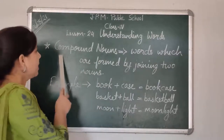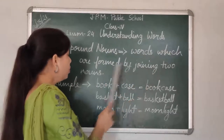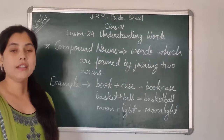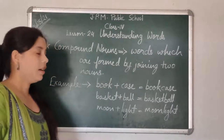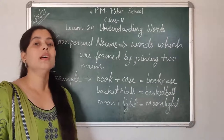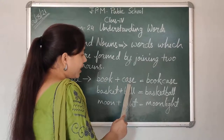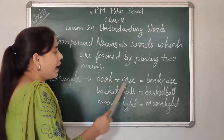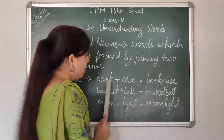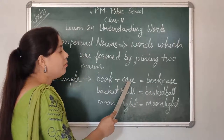Our next topic is compound nouns. Dear students, compound nouns are the words which are formed by joining two nouns. It has been told in this definition that compound nouns are the nouns which are formed by joining two different nouns. When we join two different nouns, we get another noun which resembles a third object. Here are the examples for it. Example number one: book plus case. As you can see, book and case are both nouns. When we join both these nouns, we get another noun — bookcase.